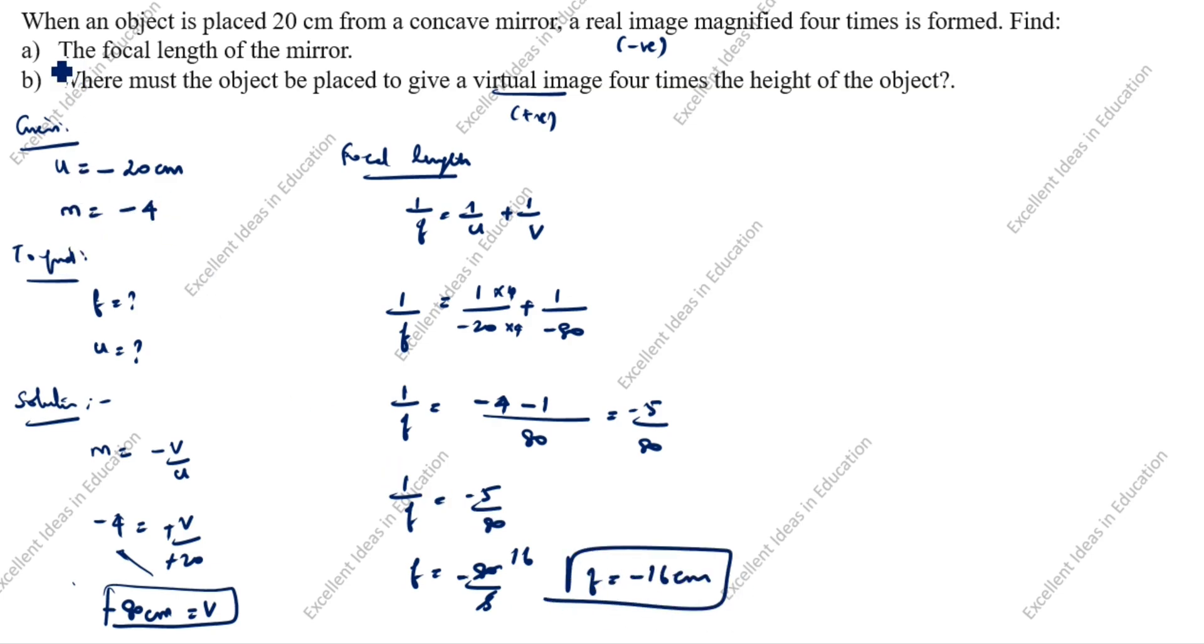Now we calculated part a, next we will find part b. What is given? Virtual image 4 times the height of the object. So given data is m is equal to plus 4 - you see virtual means plus. What is f? We have now calculated minus 16 centimeter.